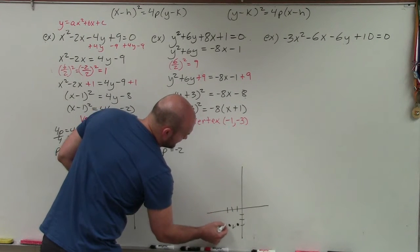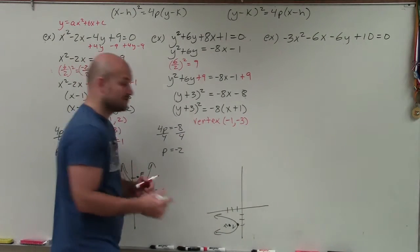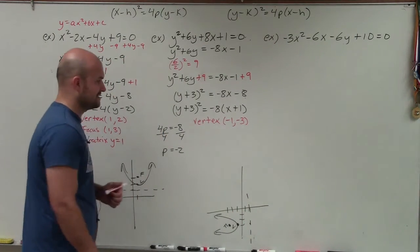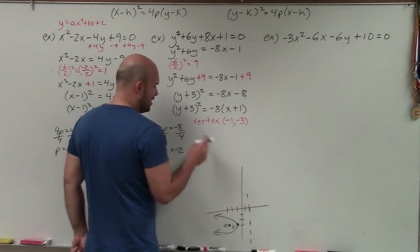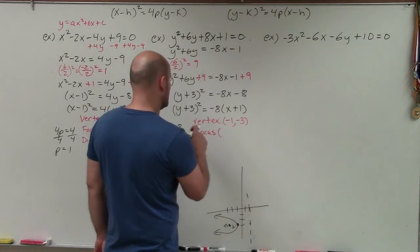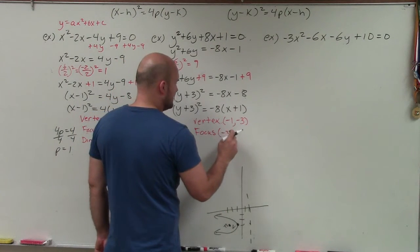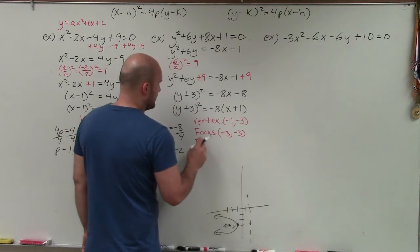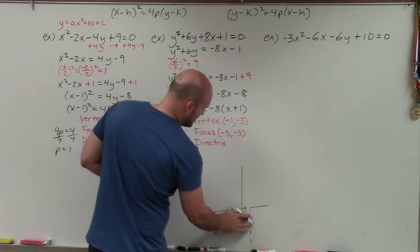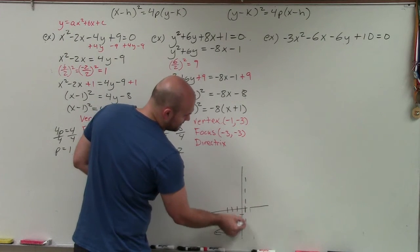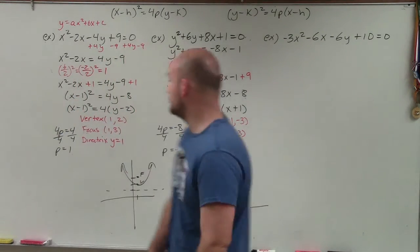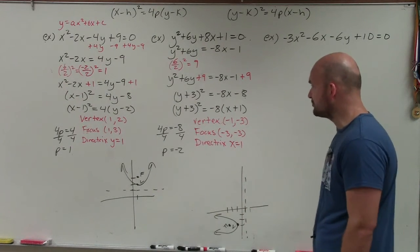The focus is 2 units to the left of the vertex's x-coordinate, so the focus is (−3, −3) — the y-coordinate stays the same. The directrix is 2 units to the right of the vertex, and since it's perpendicular to the axis of symmetry, it's a vertical line. So the directrix is x = 1. That's how you find the vertex, focus, and directrix for these straightforward examples.